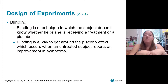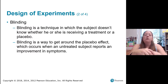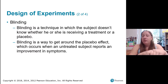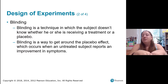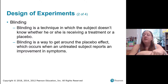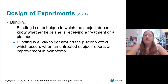We also talk about blinding in experiments. Blinding is a technique where the subject doesn't know whether they are receiving a treatment or a placebo — we hand all subjects a pill and they don't know whether it's a sugar pill or the medication being tested. Blinding is a way to get around the placebo effect: if we give someone a treatment, they're likely to report improvement in symptoms even if we gave them a sugar pill. By doing blinding, we can account for that.